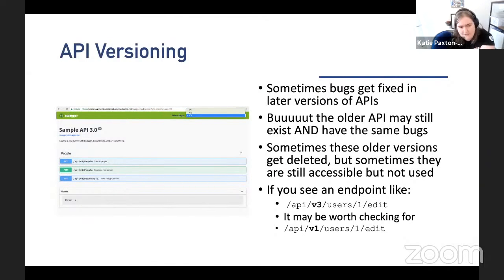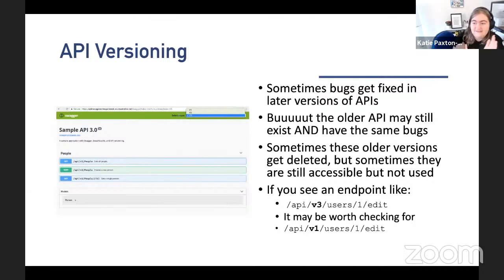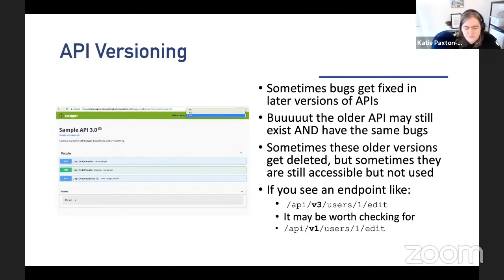One final thing about enumeration: API versioning. Sometimes in later versions of an API, bugs get fixed, but for legacy reasons they keep the old API around without actually fixing it. So you can find the same older bugs because they haven't been deleted and the API is still up. If you ever see API/v3, always check for a version 1 and see what was fixed between the two. Really useful.